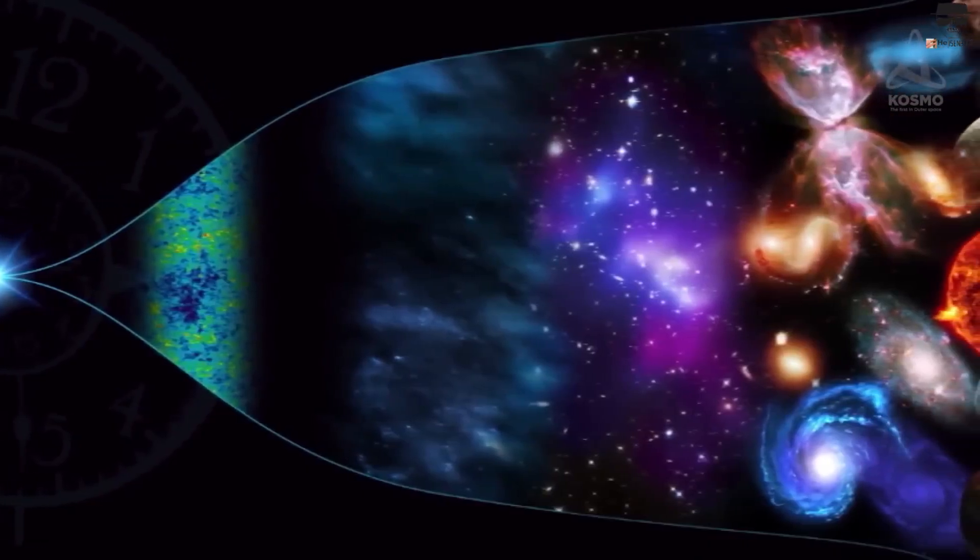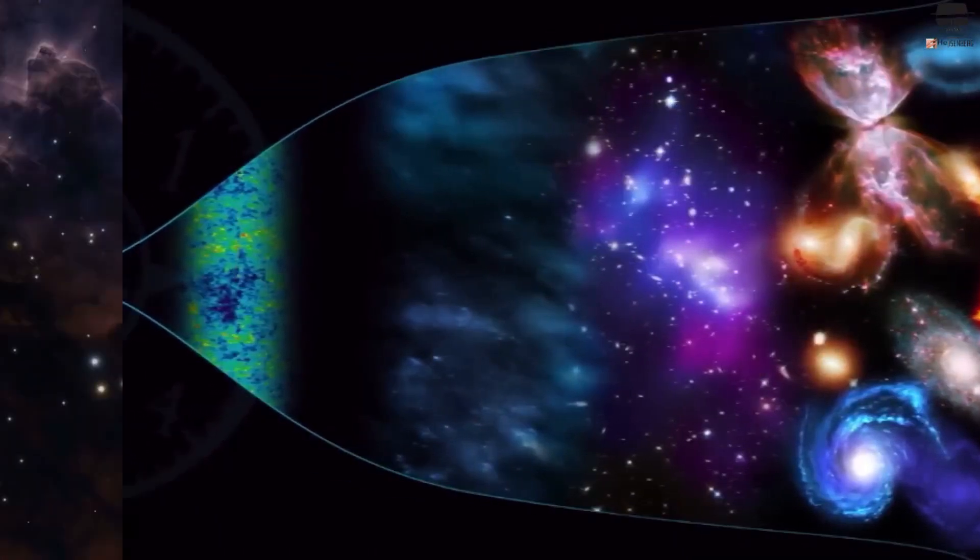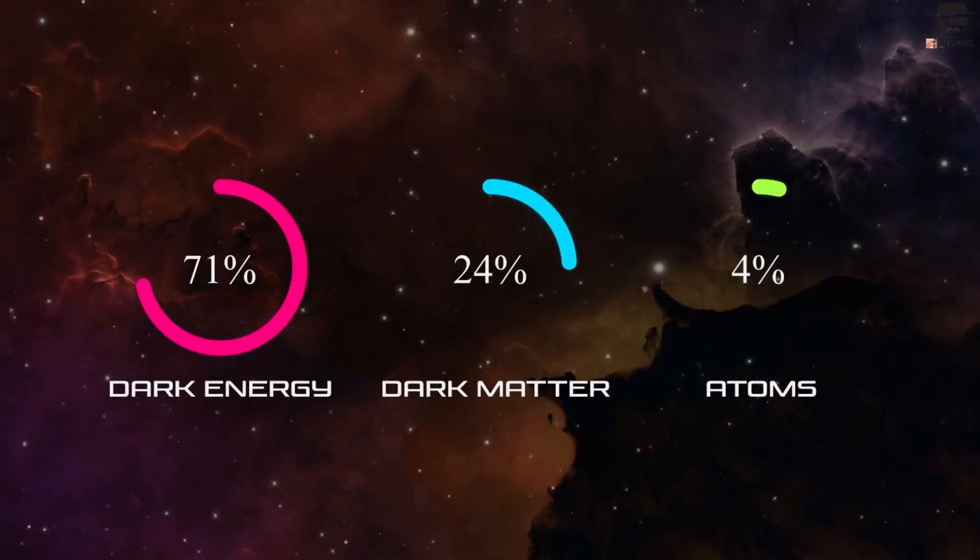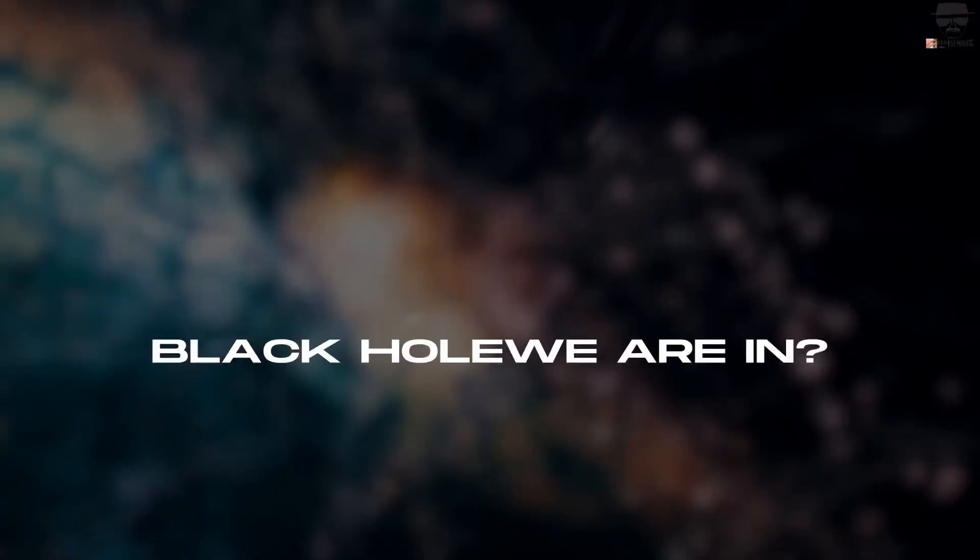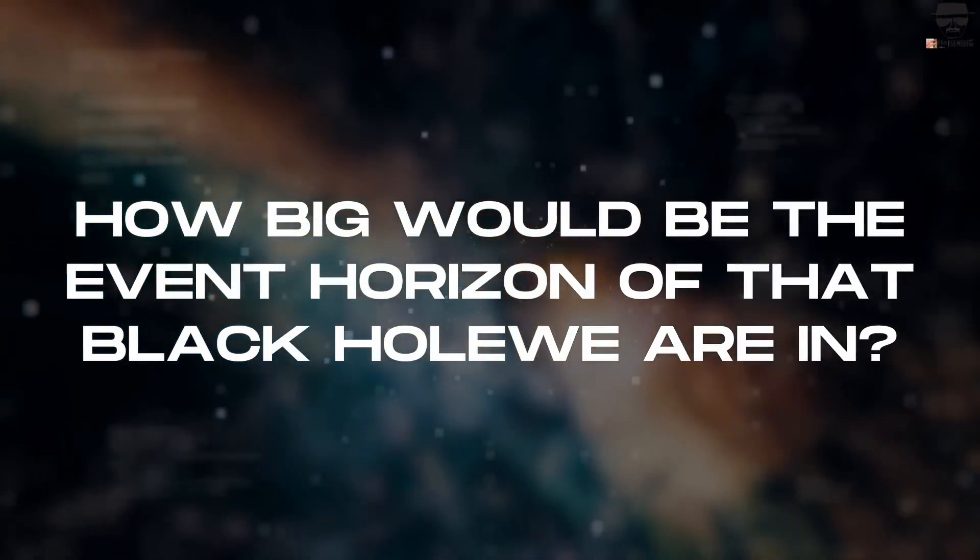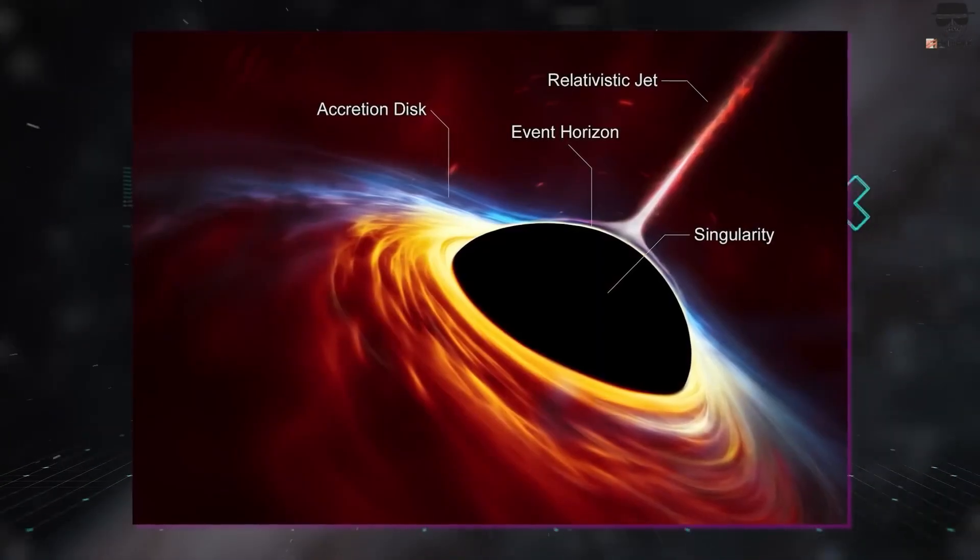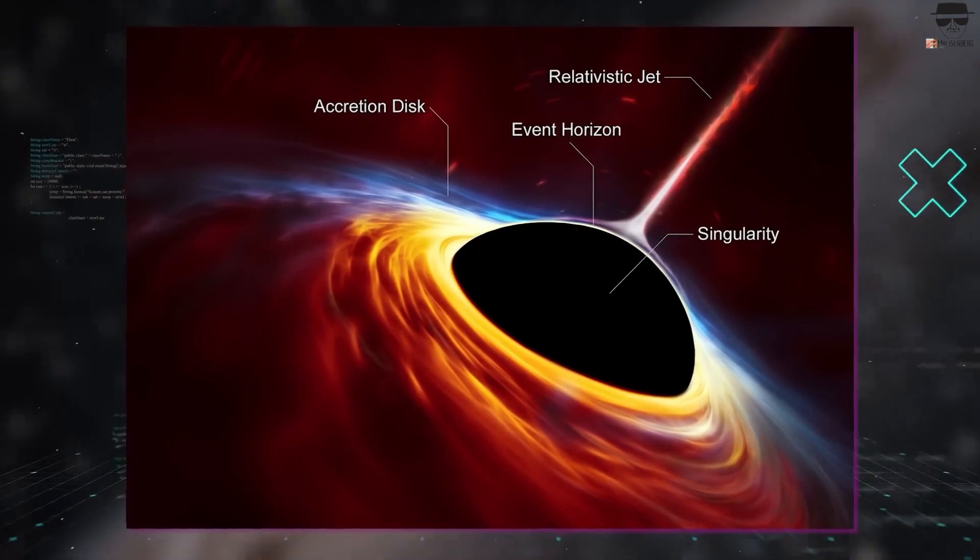But our universe has a very curious property that not everyone appreciates. If you add up the mass and energy of all the particles contained within the visible universe, you can ask the question, how big would the event horizon of a black hole with this mass be? And the answer, perhaps surprisingly, is very close to the actual horizon size of the observable universe.